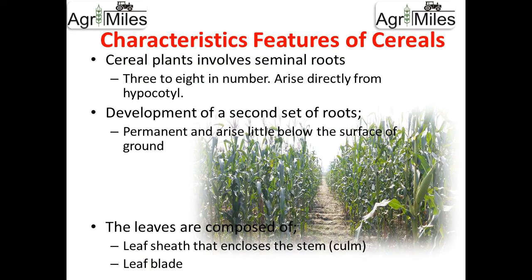If we talk about the characteristic features of the cereals — which are actually the characteristic features of the grass family — initially cereal plants have an initial set of roots called seminal roots, which are 3 to 8 in number and develop directly from the hypocotyl. After that, there is development of a second set of roots, which are permanent in nature and arise directly below the surface of the ground. The leaves of the cereals are composed of two parts: the leaf sheath and the leaf blade. The leaf sheath encloses the stem, which is also called the culm.